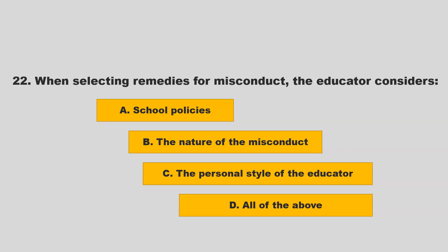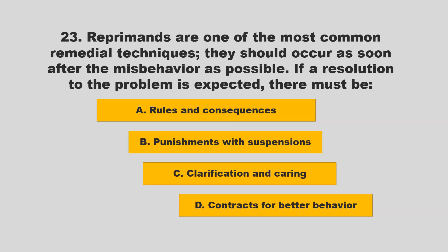When selecting remedies for misconduct, the educator considers school policies, the nature of the misconduct, and the personal style of the educator — all of the above. If you chose D, all of the above, you are correct. Reprimands are one of the most common remedial techniques and should occur as soon after the misbehavior as possible.